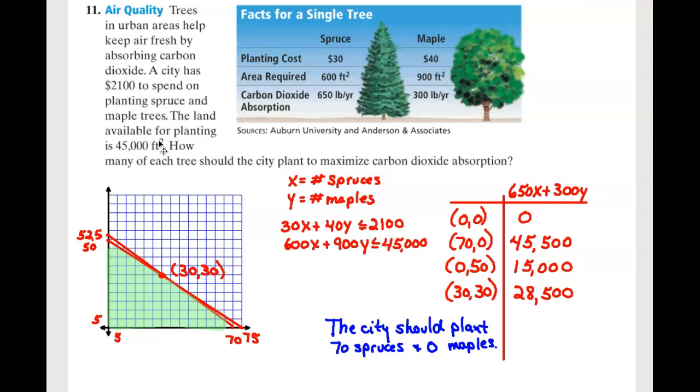And then the next thing is we have 45,000 square feet. So then square feet per spruce plus square feet per maple has to be less than or equal to 45,000. So that is your two red lines.